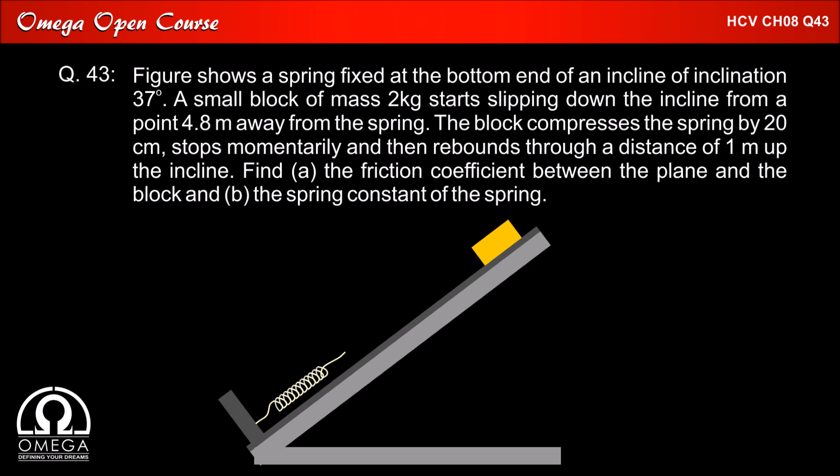The block compresses the spring by 20 cm, stops momentarily and then rebounds through a distance of 1 meter up the incline. Find (a) the friction coefficient between the plane and the block and (b) the spring constant of the spring.